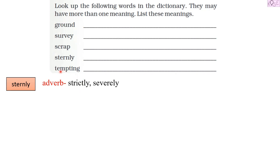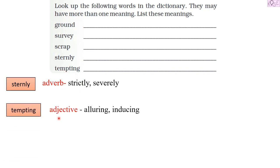The last word is 'tempting,' which is an adjective meaning alluring or inducing — 'The ice cream was looking tempting and I was tempted to eat it.' So these were the words, and now we know what they mean as verbs, nouns, adverbs, or adjectives. This was the activity we had to do today.